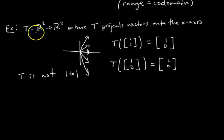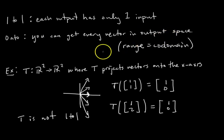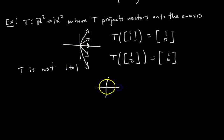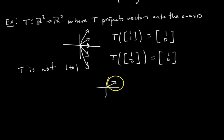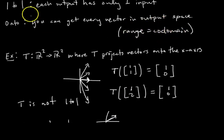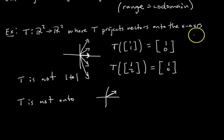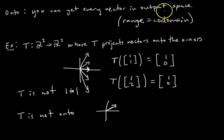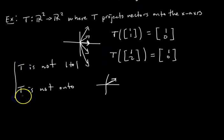What about onto? If this transformation were onto, we could get any vector in our output space by applying the transformation. But consider the vector (2,1) — can we get that as an output of a transformation that projects onto the x-axis? No, we can't. You can't input a vector, project it onto the x-axis, and get a vector sticking off the x-axis. So T is not onto. The range is just the x-axis, but the co-domain is all of R2. The range is not equal to the co-domain, so it's not onto.